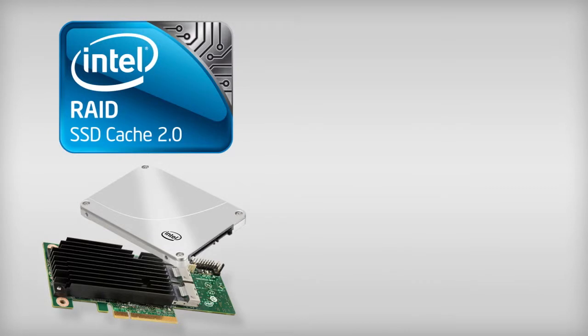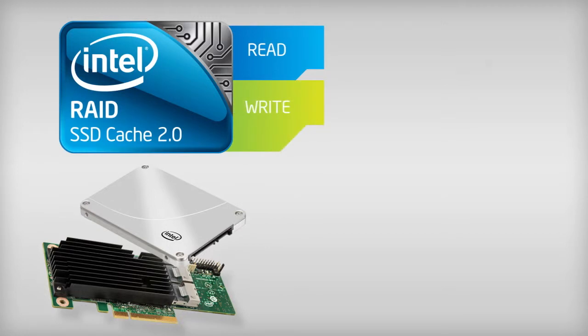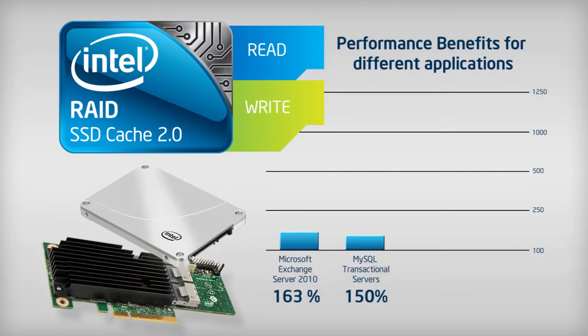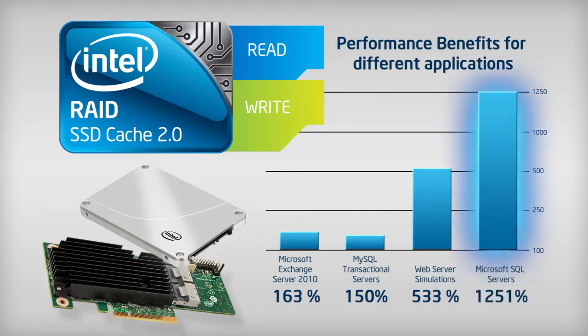Intel SSD Cache 2.0 is the industry's first software solution that offers both read and write controller-based caching on SSDs, dramatically enhancing the performance gains achieved by the previous generation of SSD caching software. Using benchmarks to simulate systems being used in the real world, SSD Cache 2.0 enabled significant improvements in applications, such as 1,251% for Microsoft SQL servers.